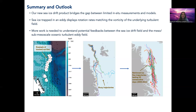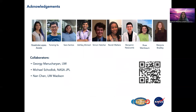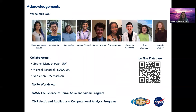To summarize: this new sea ice drift product bridges the gap between limited in-situ measurements and models. Sea ice floes and eddy-displaced rotation rates match the average vorticity of the underlying turbulent eddy fields, and more work is needed to understand potential feedbacks between the sea ice drift field and the meso-to-submesoscale oceanic turbulent eddy field. I want to thank my group, my collaborators, NASA and ONR for funding. If you're interested in our database, I'm putting the QR code right here. Thank you, and see you soon in our one-hour session.